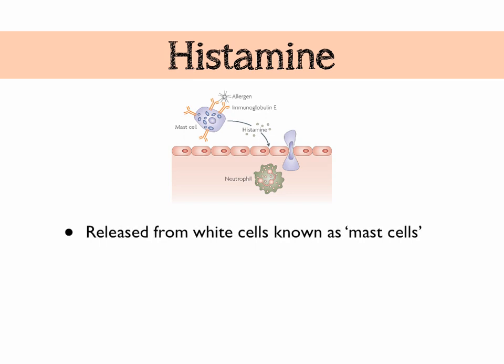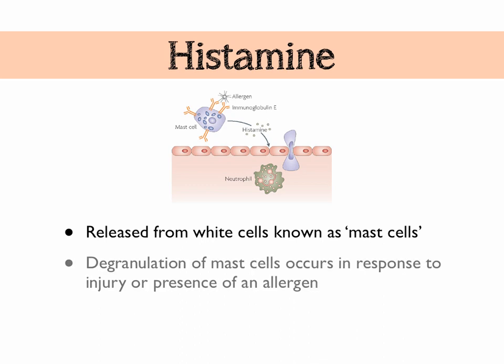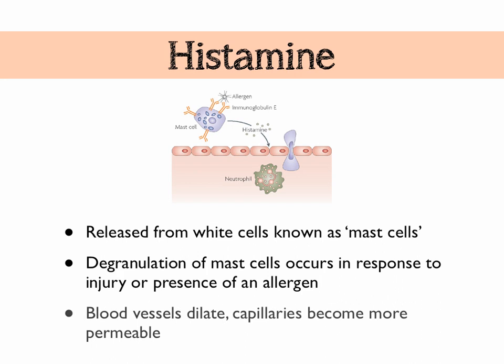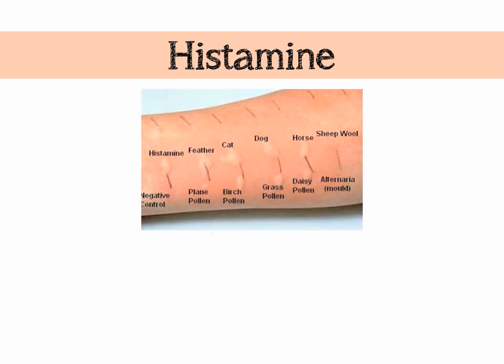Histamine is released from special white blood cells known as mast cells. These mast cells degranulate — meaning they release histamine — in response to the presence of an allergen, or sometimes injury. The effect on the body is that blood vessels dilate and capillaries become more permeable. It's specifically the arterioles that dilate, which is a form of vasodilation. The effects we see on the body are usually redness, swelling, and itching.